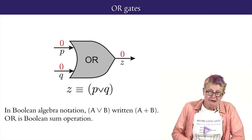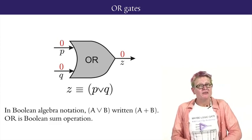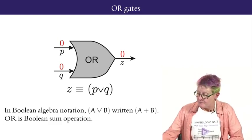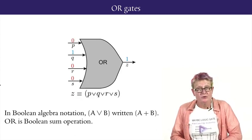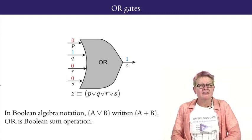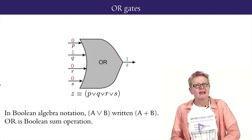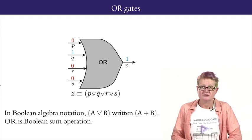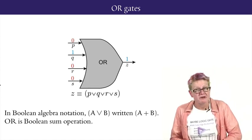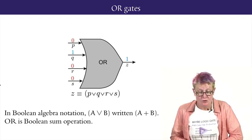Equivalently, the output is zero if and only if both of the inputs are zero. OR gates with more than two inputs behave analogously. The output is one if and only if at least one of the inputs is one, whether it be three inputs or four inputs or more inputs.